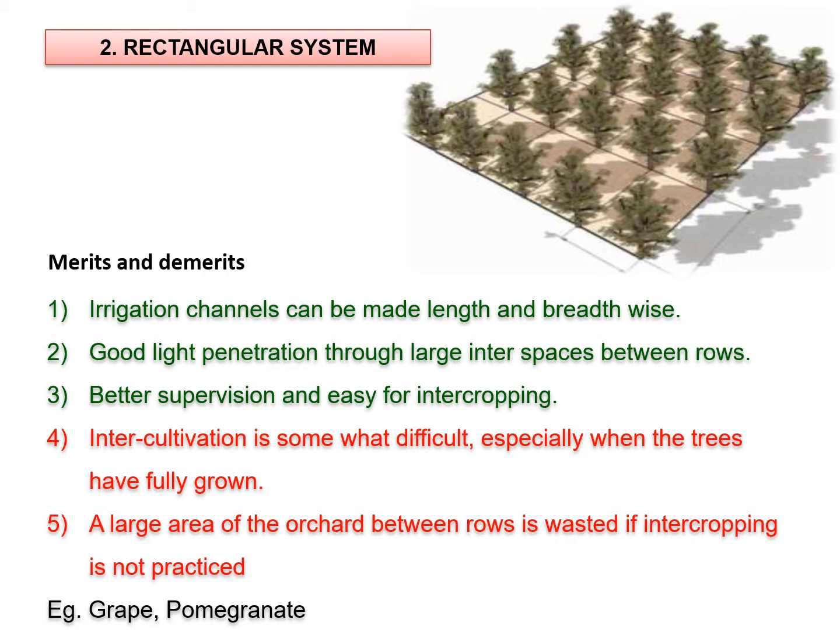A large area of the orchard between the rows is wasted if we do not follow any type of intercropping practice. We may cultivate grape or pomegranate by adopting the rectangle system.